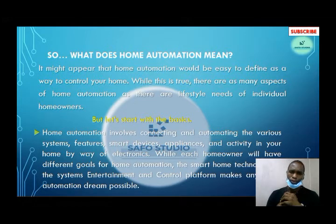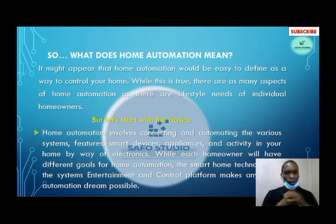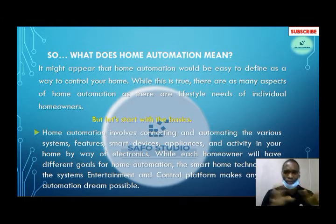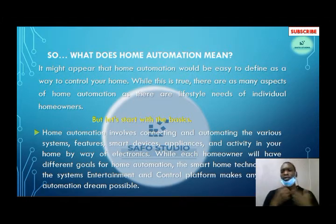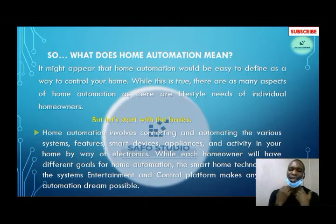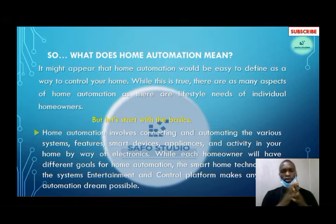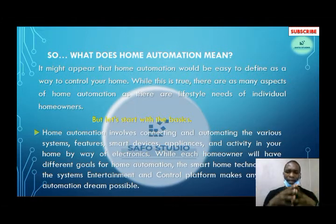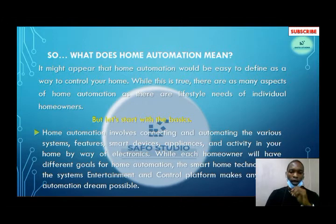Let's talk about what home automation actually means. It might appear that home automation is simply a way to control your home, and while that is true, there are as many aspects of home automation as there are lifestyle needs of individual homeowners. Home automation involves connecting and automating the various systems, features, smart devices, appliances, and activities in your home by way of electronics.